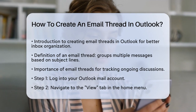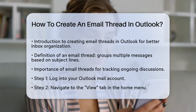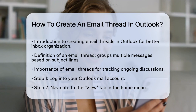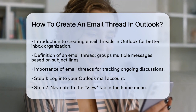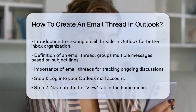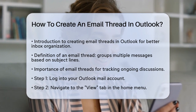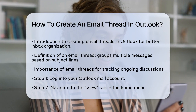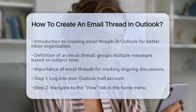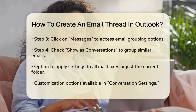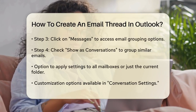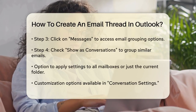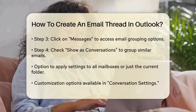To enable this feature, start by logging into your Outlook Mail account. Once you're in, navigate to the View tab in the Home menu. Here, you'll see an option called Messages. Click on it.